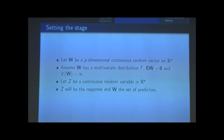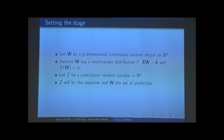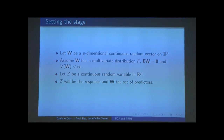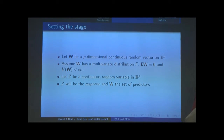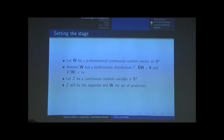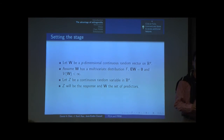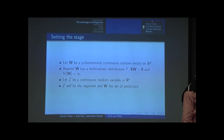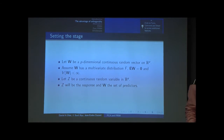To set the stage, let us think of a context of a response and a predictor set. Assume W is a p-dimensional continuous random vector on R^p, with multivariate distribution F, centered around the origin — expectation zero — and finite variance. The requirement of finite variance is needed to do principal components, and the requirement of expectation zero is needed because we are working with cosines and correlation functions.